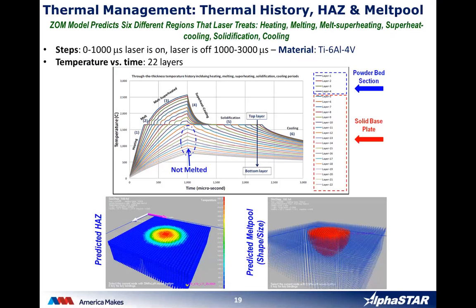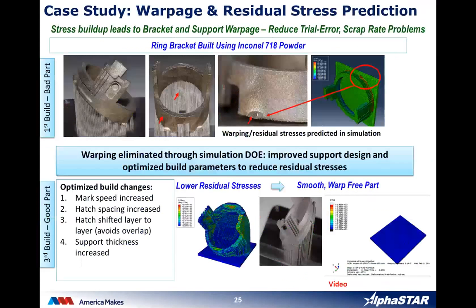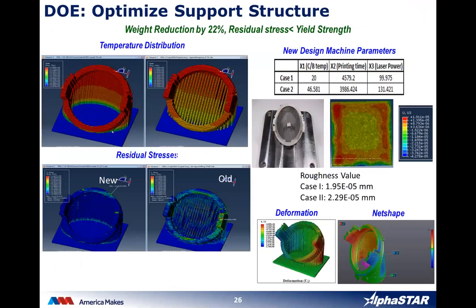How can you improve or eliminate warpage? We use design of experiments with a surrogate model optimization technique — a meta-model approach based on Halton sampling — to optimize parameters such as laser speed and power, which are the most important parameters during 3D printing. These techniques are then used to minimize warpage.